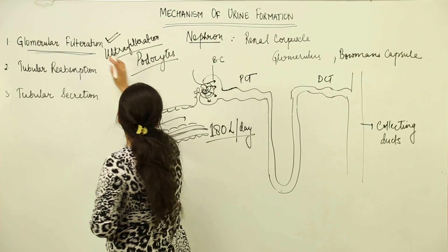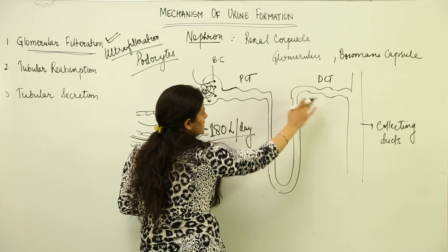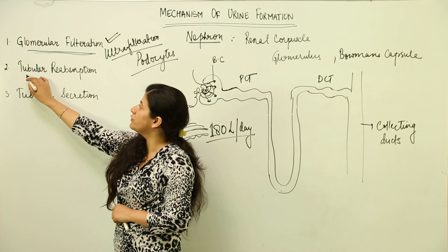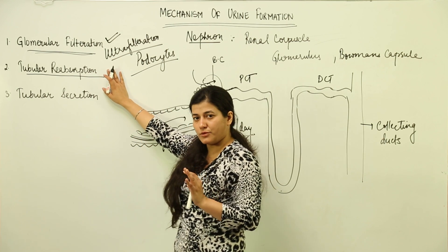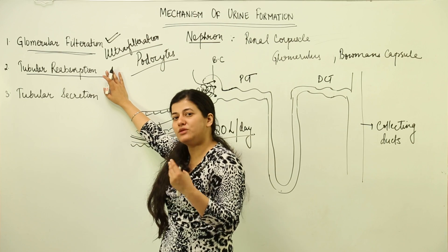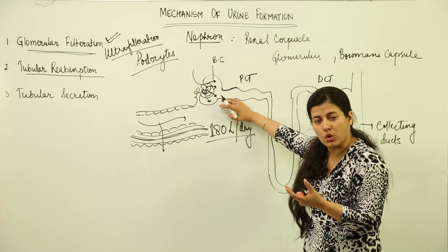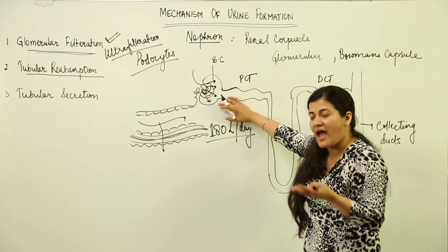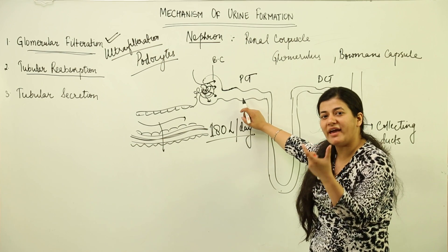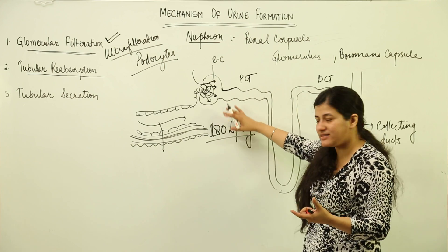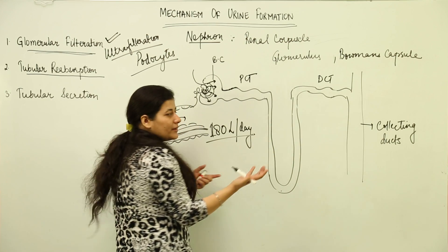As the cells lining the PCT and DCT are cuboidal epithelium, tubular reabsorption takes place. There are two types of reabsorption: passive absorption and active absorption. Elements like sodium, glucose, and amino acids are taken up actively, while water is initially taken up passively. Maximum absorption takes place in the PCT and the loop of Henle, where filtered contents are returned to the interstitial cells of the medulla or cortex.